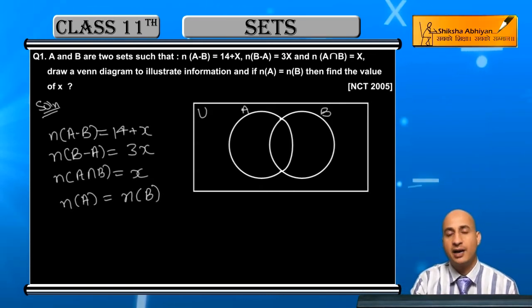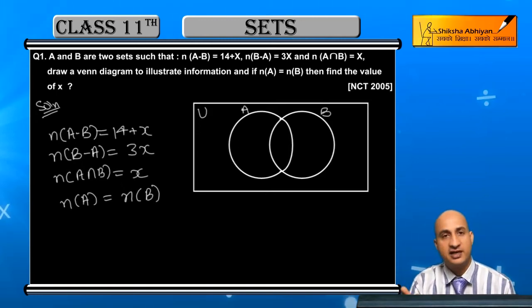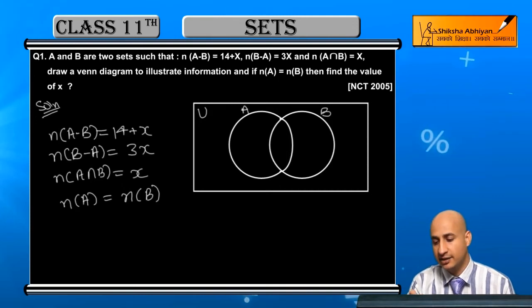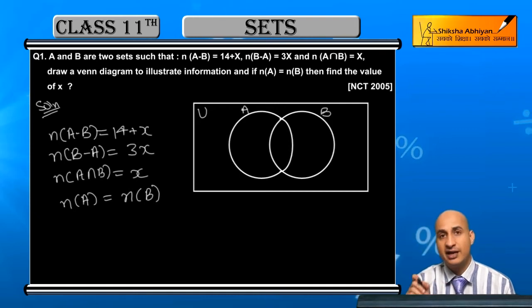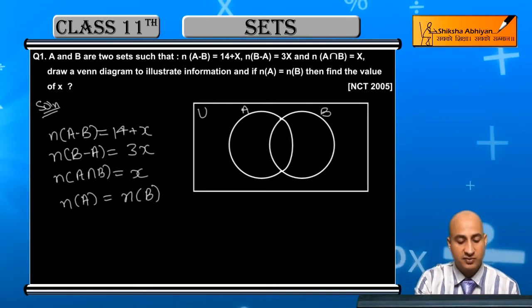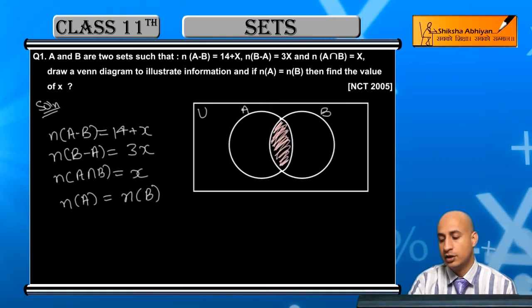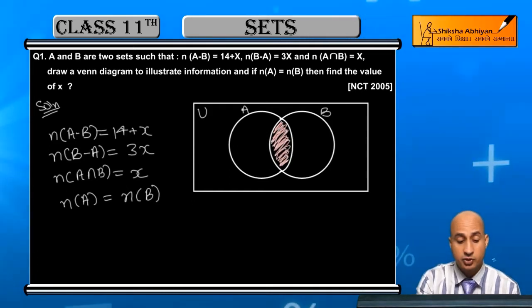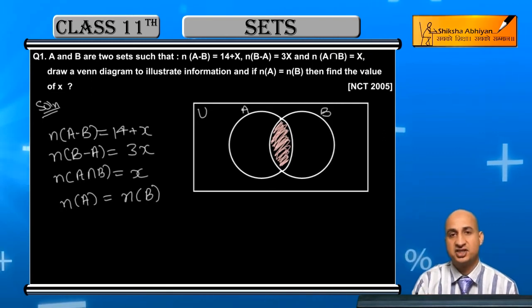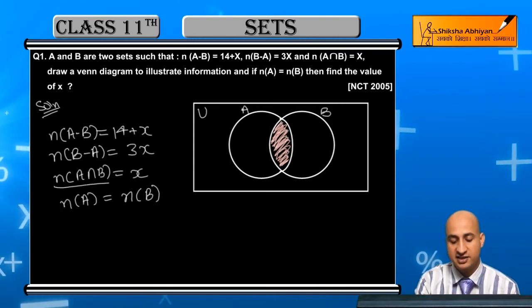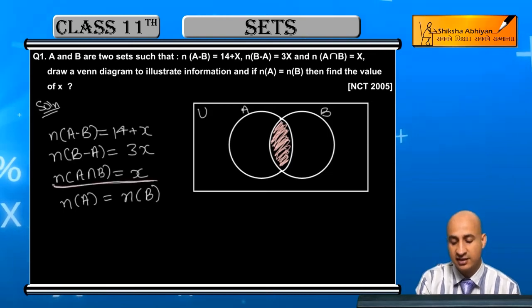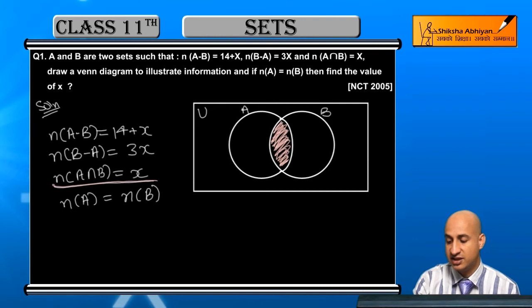Now first I will draw the Venn diagram. You know how to draw it. I take the universal set, set A, and set B - two sets are involved here. First, I will identify A and B. This common portion I will shade - this common portion represents A intersection B. And inside this, how much is the intersection? This value is x.